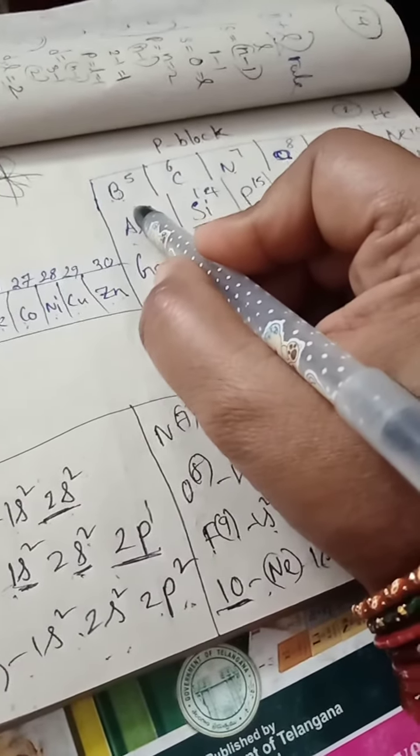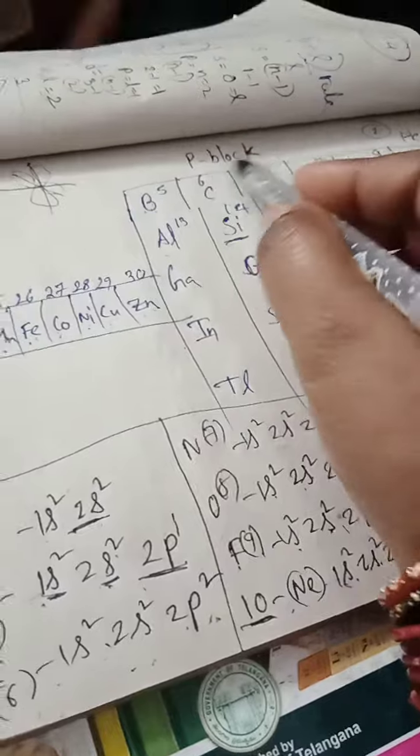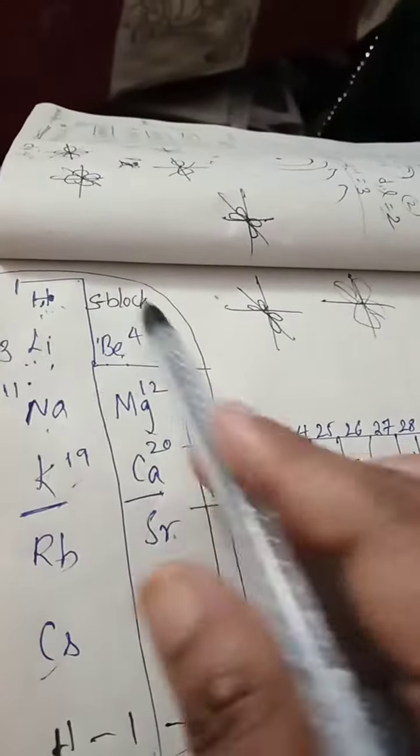So we call these p-block elements. Hydrogen and lithium have valence electrons filled in the s-orbital only, so we call them s-block elements.